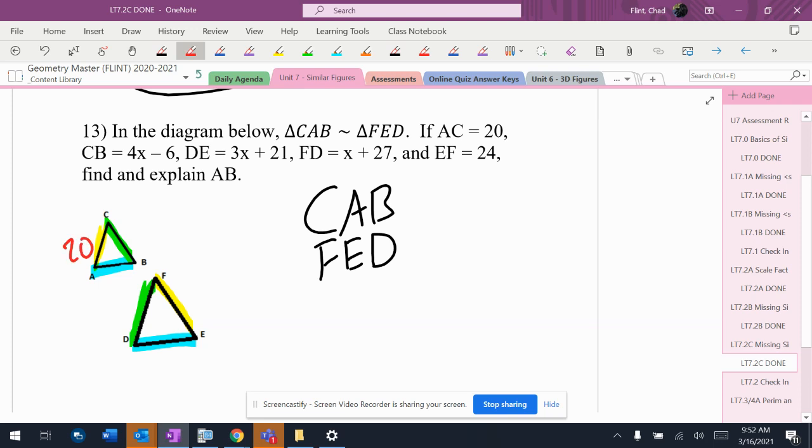AC is 20, CB is 4x minus 6, DE is 3x plus 21, FD is 24, and FE is x plus 27.